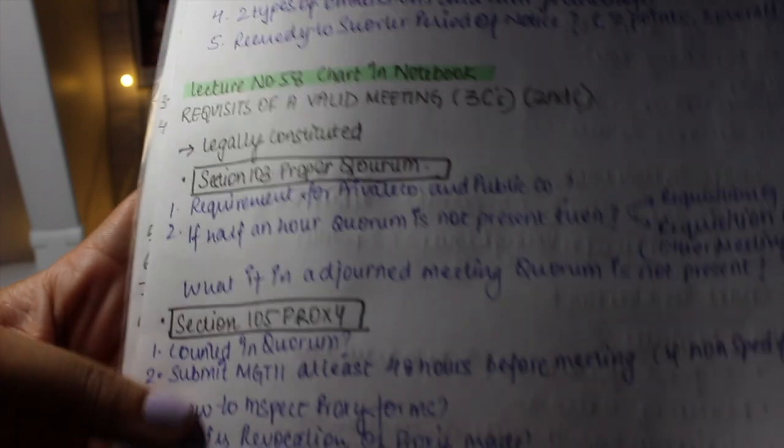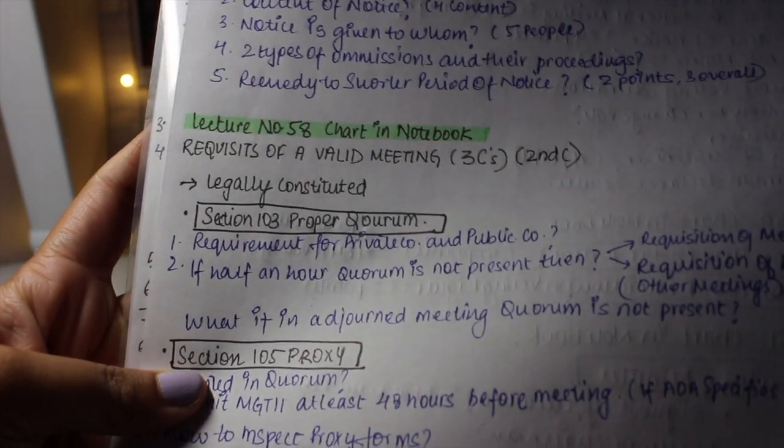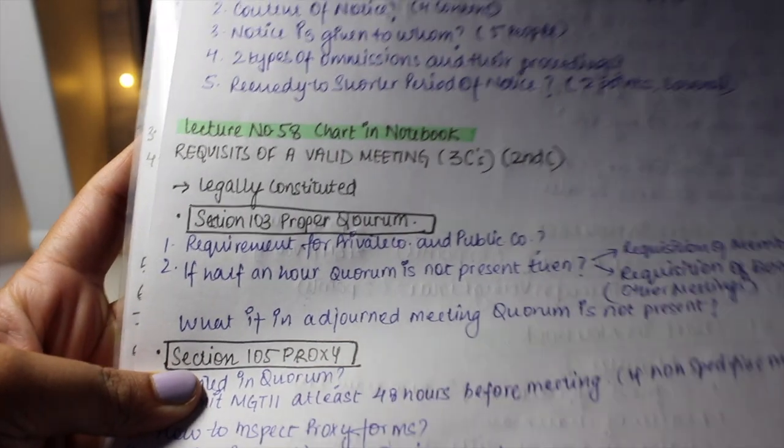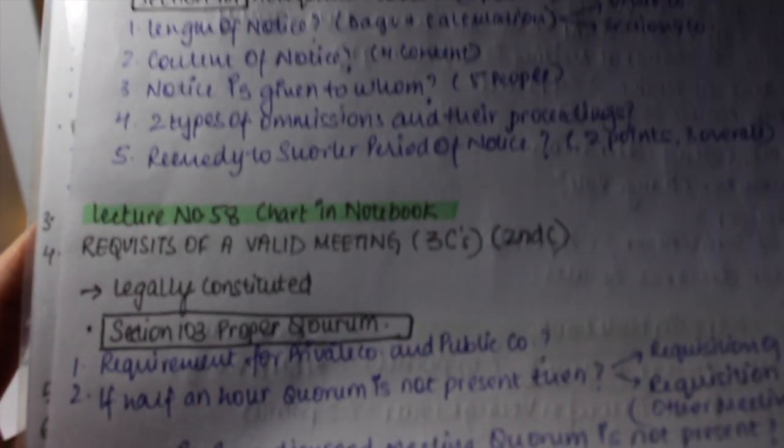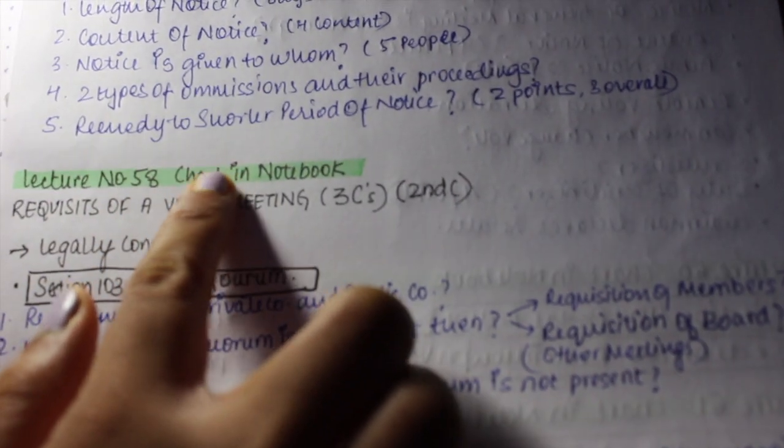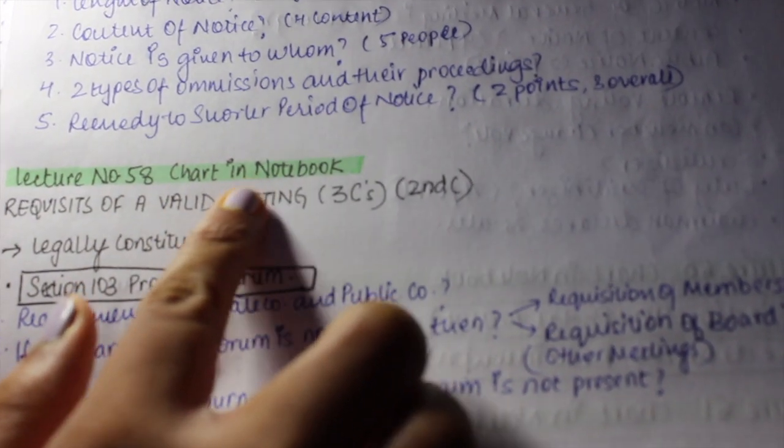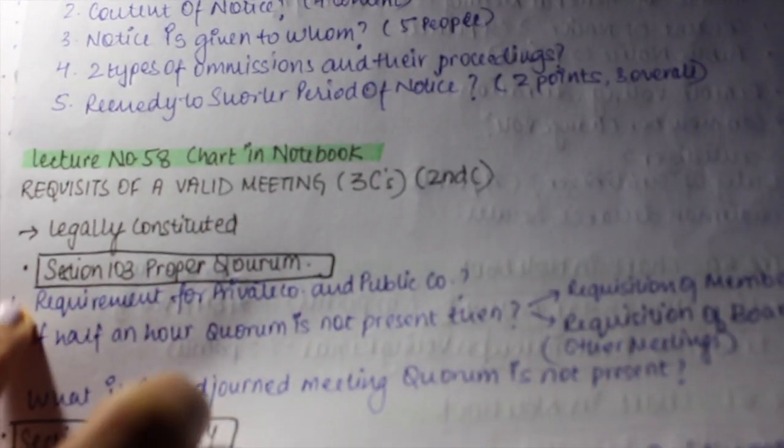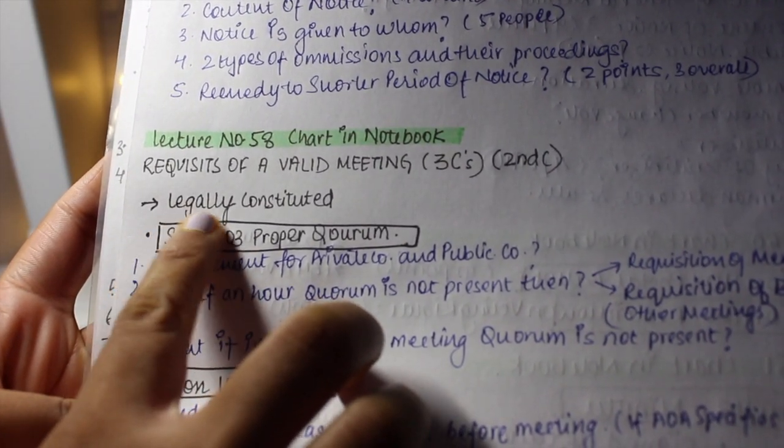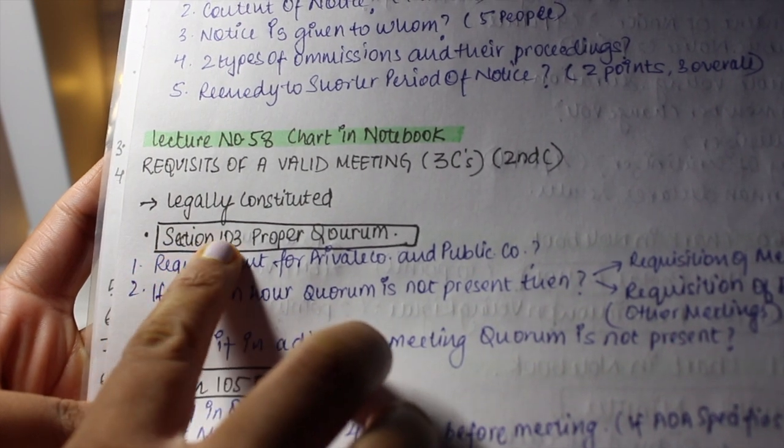Let me take up an example of these notes that I have made for lecture number 58. This is how you have to start: start with the lecture number and mention the part of the book from where you have made these notes. I have made these notes from the chart that ma'am had given in the notebook itself.